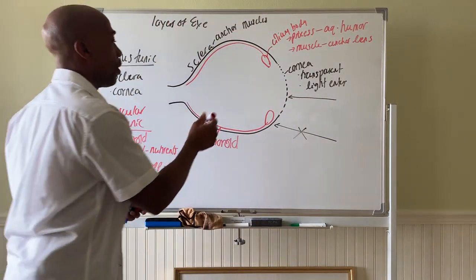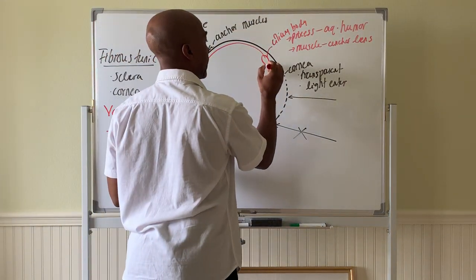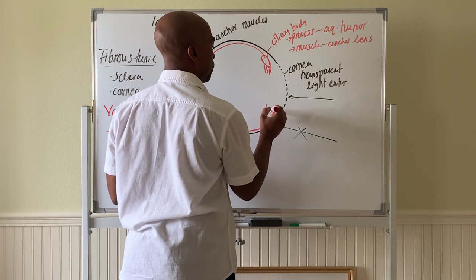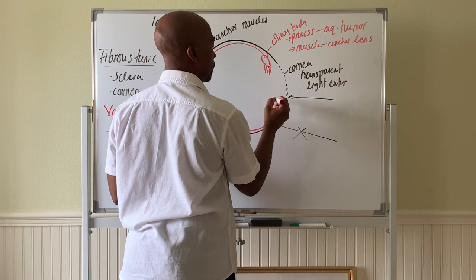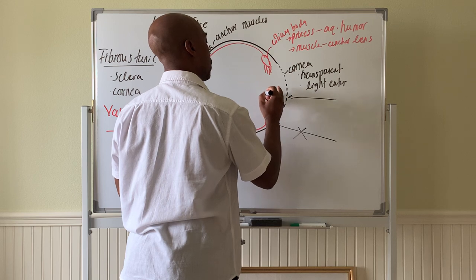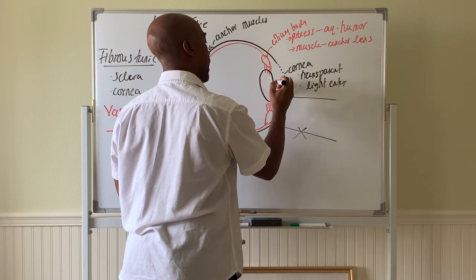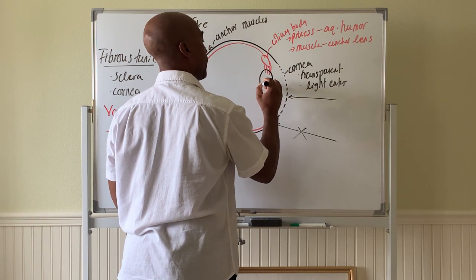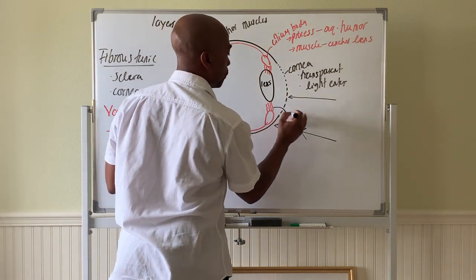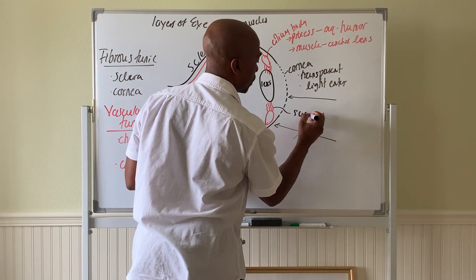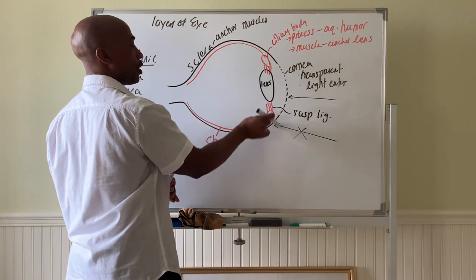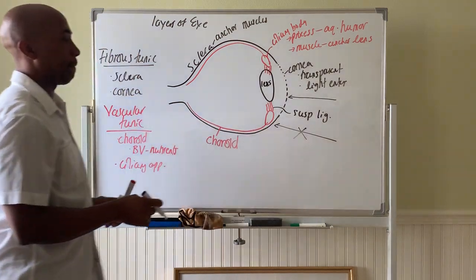So here, the muscle part is attached to some strings called zonules or suspensory ligaments. These are your zonules. And those zonules are attached to this crystal-like structure in the eye called the lens. These are your zonules or also called your suspensory ligaments. They anchor the lens to your ciliary muscle.